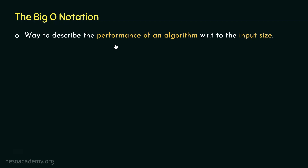Although throughout this course we will focus mostly on the time factor. The performance is measured based on time, but sometimes we will also mention the memory space. Mostly, time is the important factor. So with Big O notation, we describe how fast an algorithm is with respect to the input size most of the time.